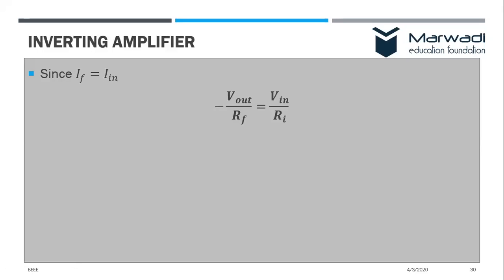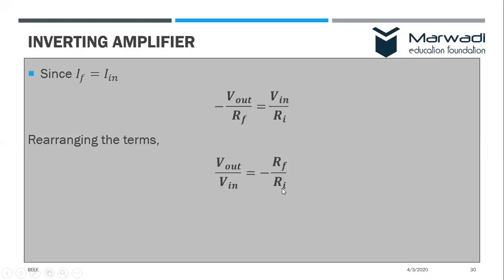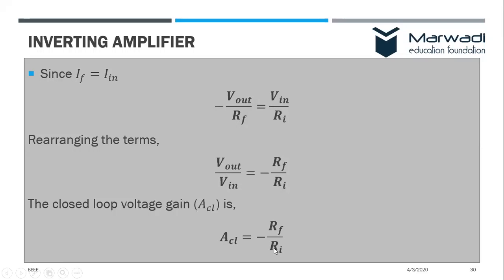Since feedback current equals input current, we have: minus V_out upon RF equals V_in upon Ri. Rearranging — swapping V_in and RF — gives V_out upon V_in equals minus RF divided by Ri. We know that V_out upon V_in is the closed-loop voltage gain, so the closed-loop voltage gain equals minus RF upon Ri.